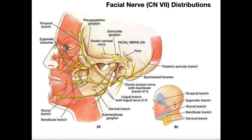Back to the geniculate ganglion — there's another branch here, which is probably the one you're most used to talking about. It kind of descends downwards and is going to exit through this little hole called the stylomastoid foramen.